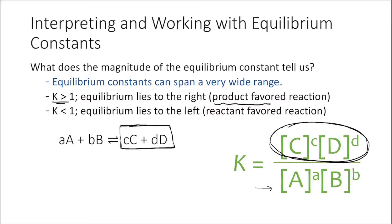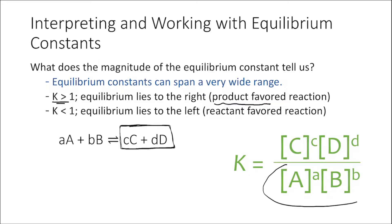If we had the opposite scenario where our equilibrium constant is much smaller than one, mathematically that means your concentrations of your reactants at equilibrium must be much greater than the concentration of your products. In this scenario we would say that the equilibrium lies to the left and that we have a reaction that is reactant favored.